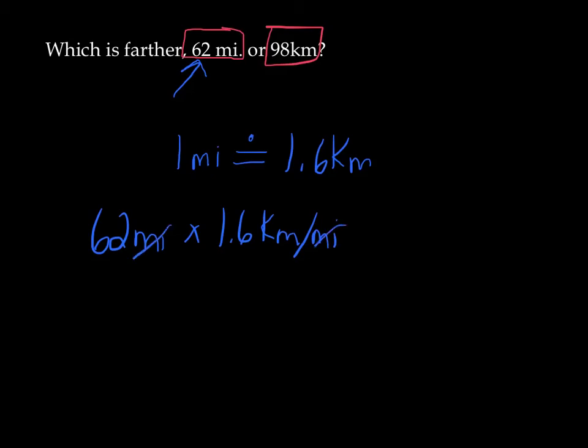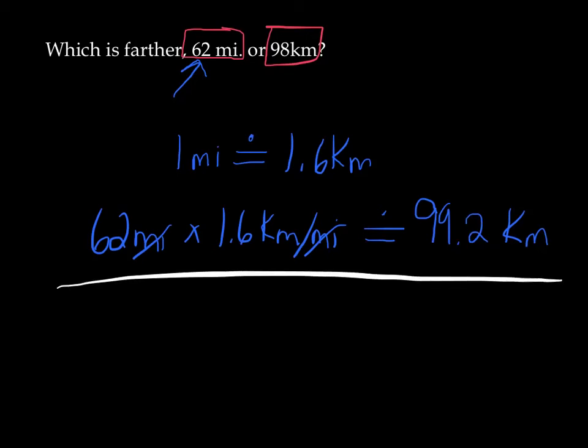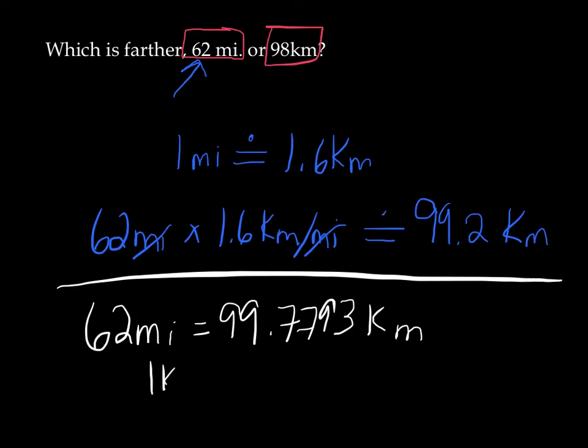I will cancel out the miles and we get an approximate number of kilometers. So 1.6 times 62 gives you 99.2 kilometers. Now, what is it in reality? If we didn't do this approximately, 62 miles is really 99.7793 kilometers. Okay, so our approximate wasn't that far off. And in fact, the reason why we can do this is because we know that one kilometer using the exact conversion is 0.6213711922237 miles. And even this is an approximate conversion.